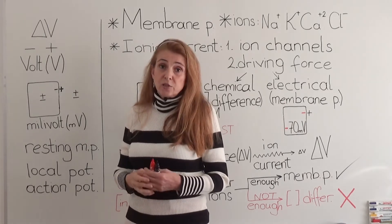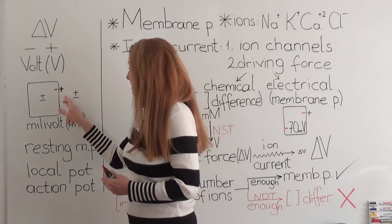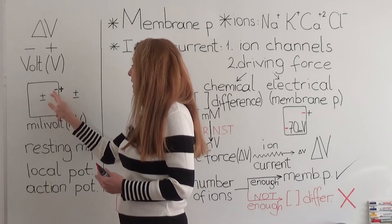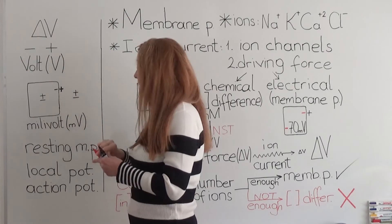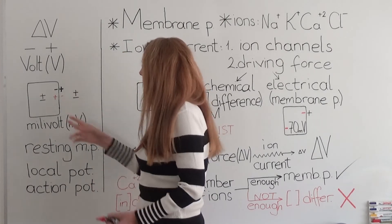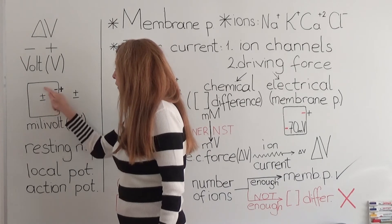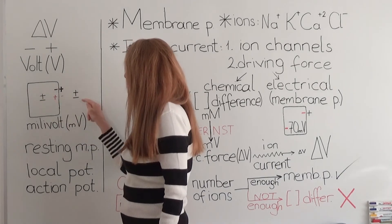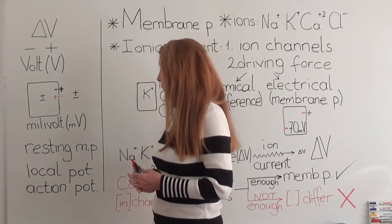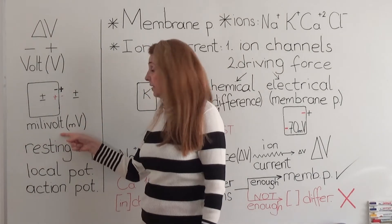Such electrical potential differences also exist at the membranes of our cells. Most of the time, the inner side of the membrane contains more negative charges compared with the outer side, but sometimes there may be more positive charges on the inner side. These electrical potentials are present at the membrane; the rest of the intracellular or extracellular fluid is neutral, meaning positive and negative charges are equal. The electrical potentials at the membrane are small, so the millivolt unit is used.